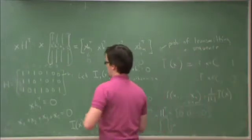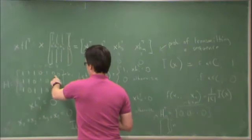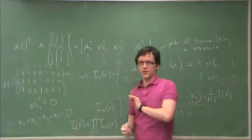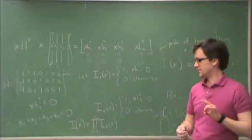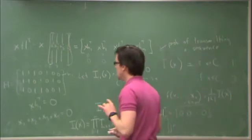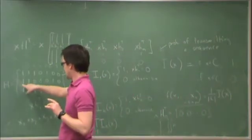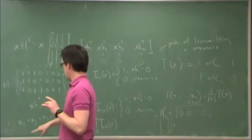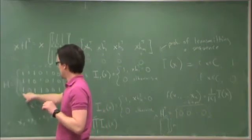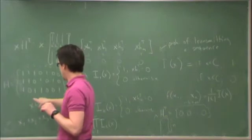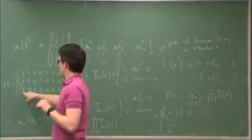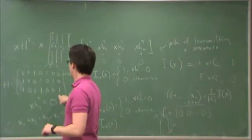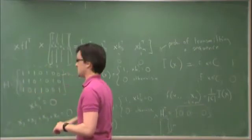And it does not matter at all what x4, x6, and x7 are as far as the first row is concerned. Similarly, the second row is only a function of x1, x2, x4, and x6. And the third row is only a function of... The third indicator is only a function of x1, x3, x4, and x7.